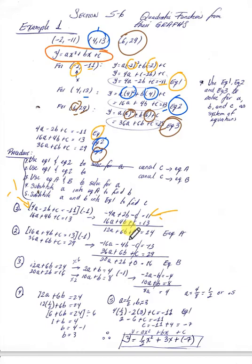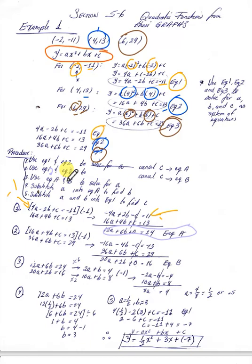Either way you still get a correct solution. Once you get equation A from that step, you continue to step two using equations two and three. Equation two is 16a plus 4b plus c equals 13, and equation three is 36a plus 6b plus c equals 29.